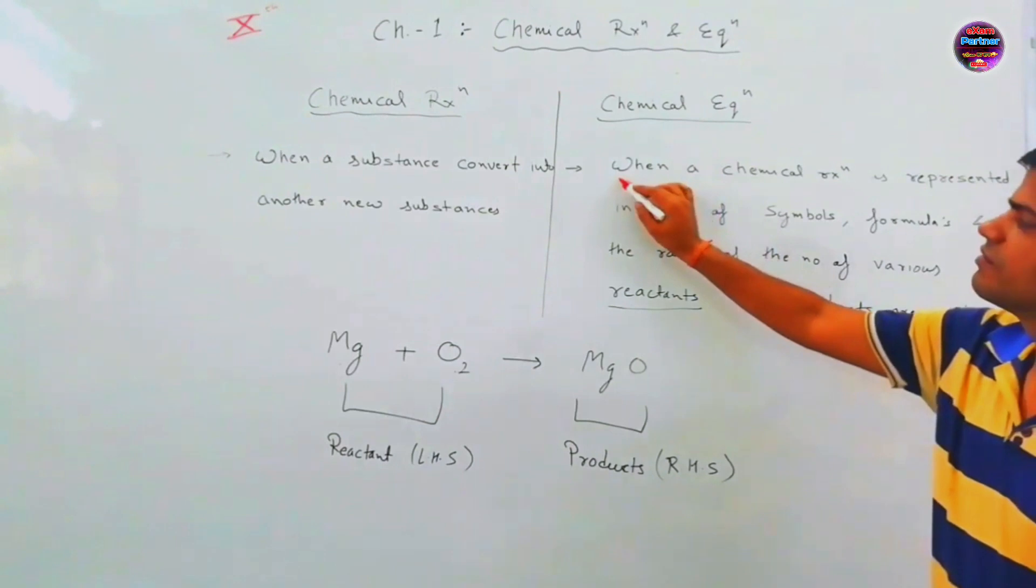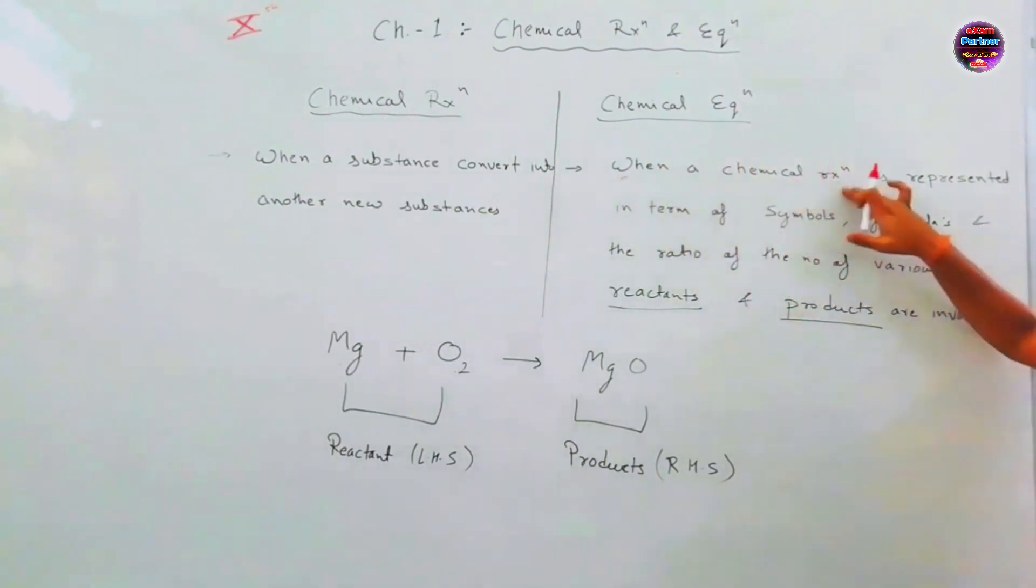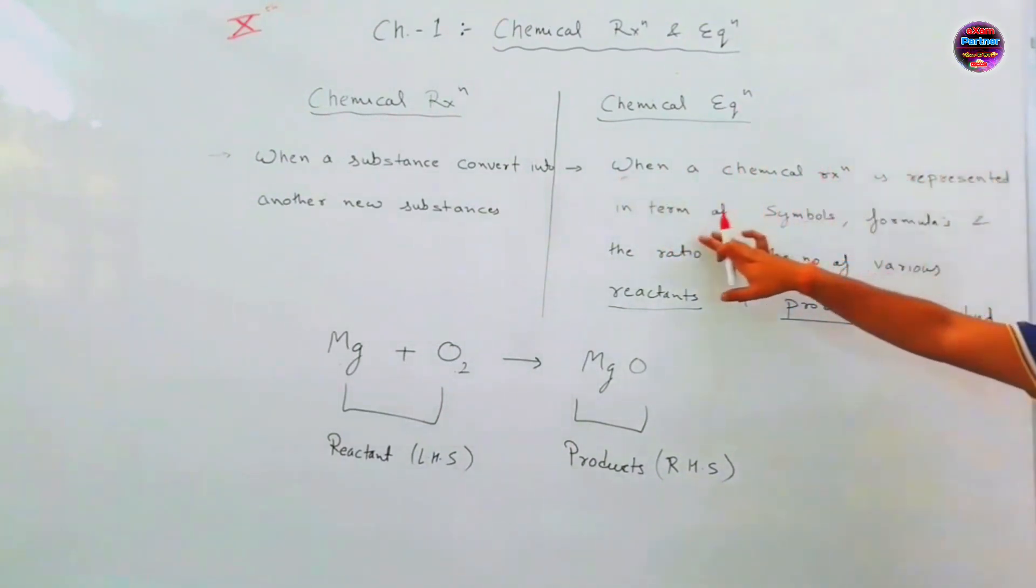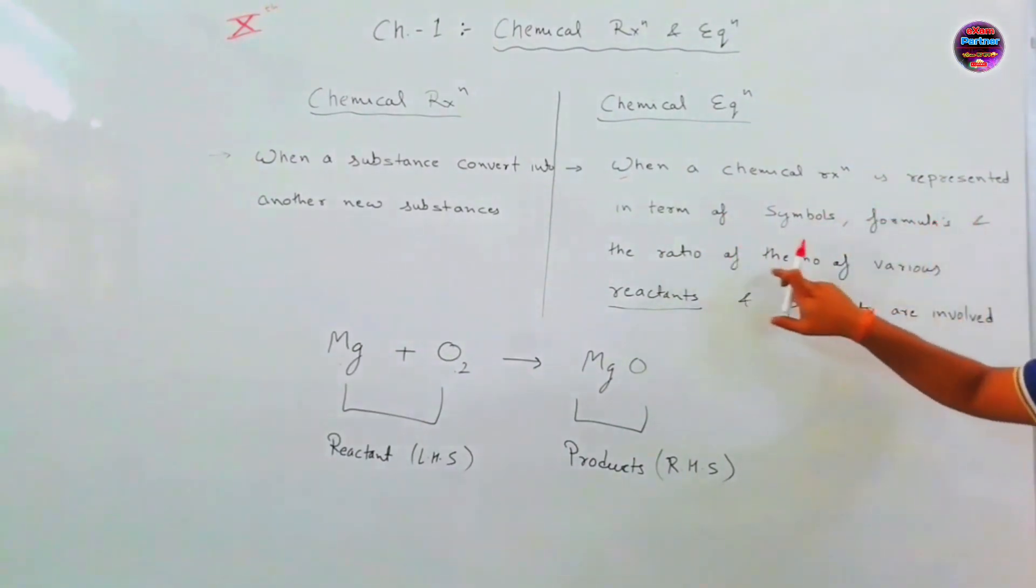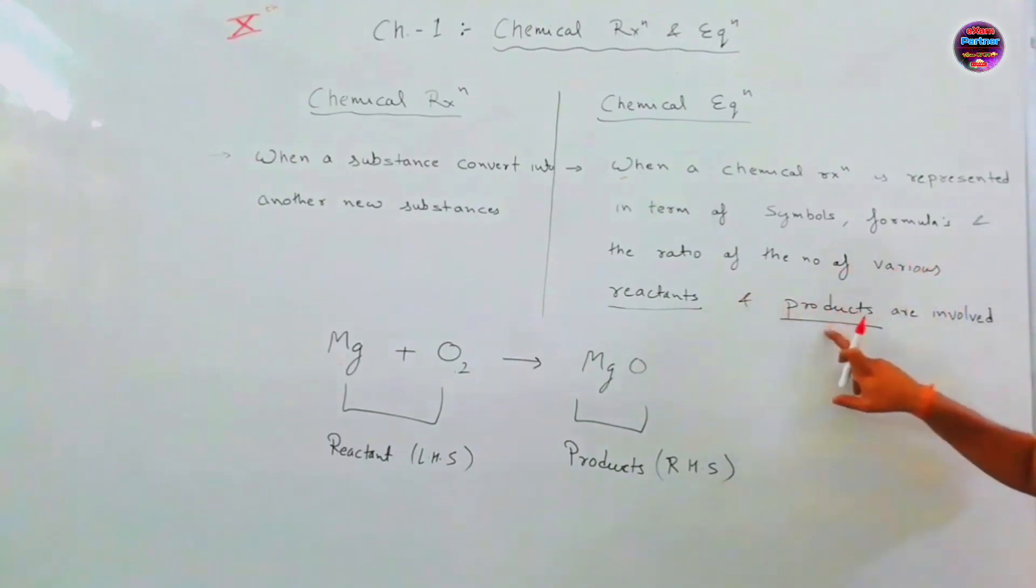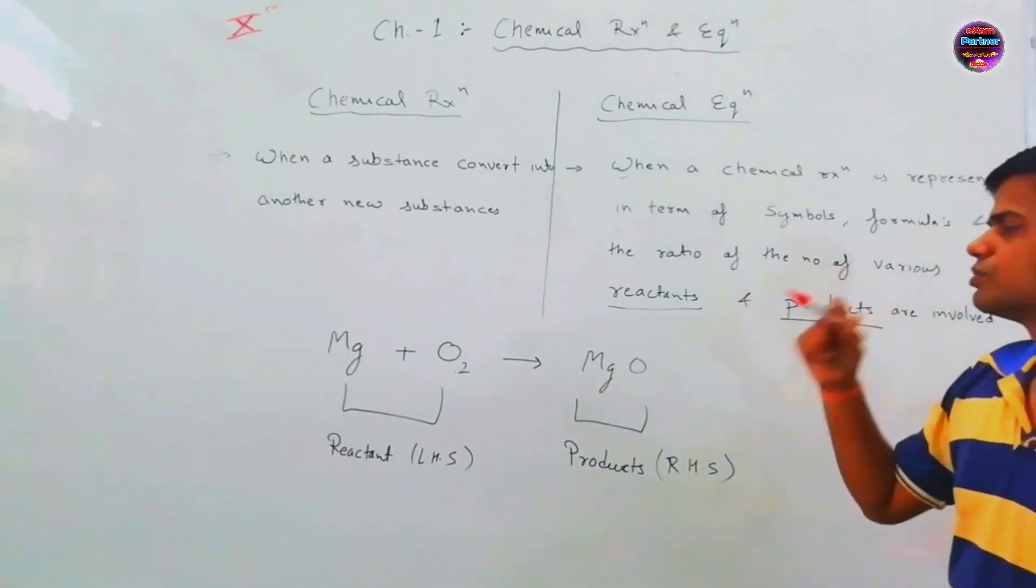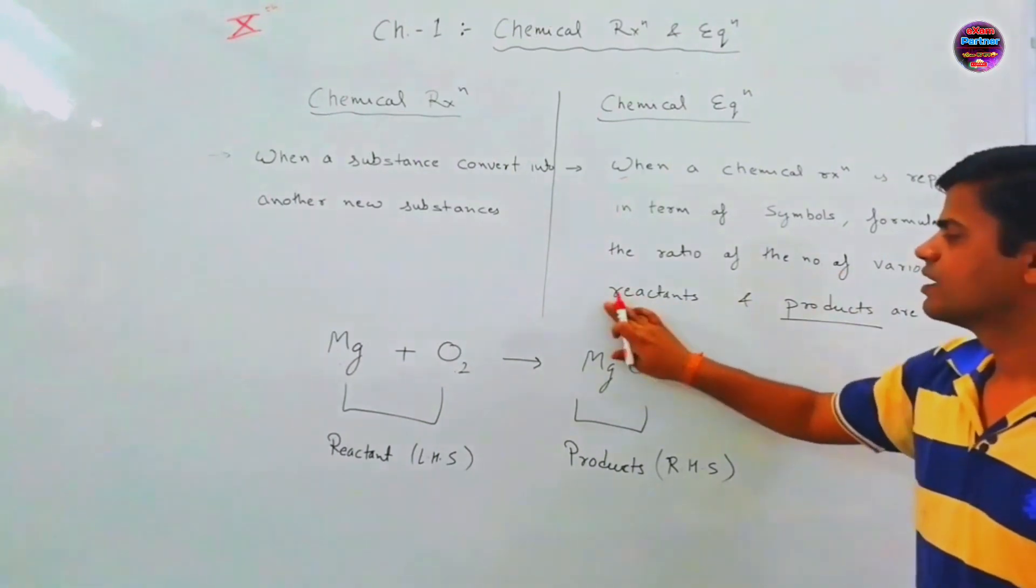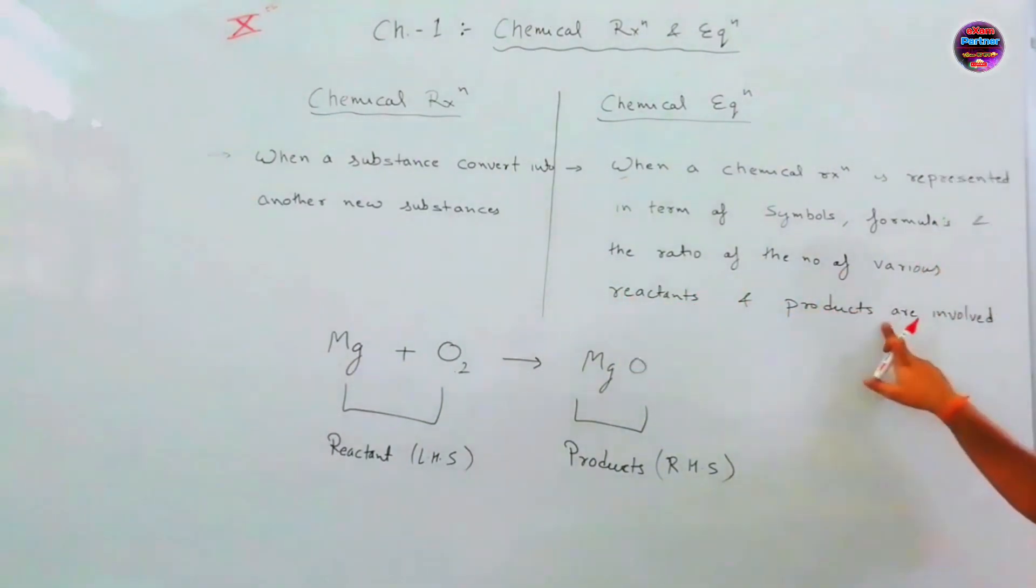Such as, when a chemical reaction is represented in the terms of symbols, formulas and the ratio of the number of molecules, reactants and products are involved. So, here are the two terms, reactants and products.